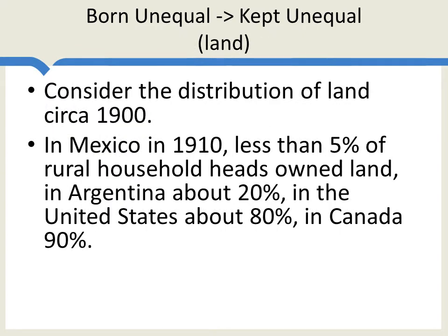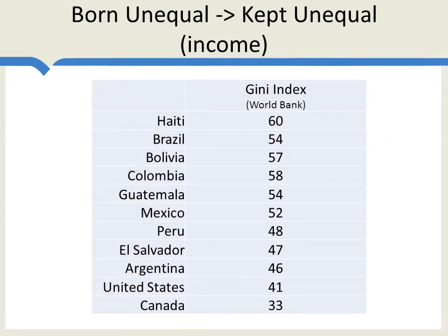And the elites were successful at doing this. In Mexico in 1910, less than 5% of rural household heads owned land. In Argentina, about 20%. Compare the United States — about 80% of rural households owned land in 1900; in Canada, it was 90%. Even today, hundreds of years after the colonial period, we still see a massive level of income inequality in these countries. Haiti's Gini index is at a very high 60%. Brazil 54%, Bolivia 57%, Colombia 58%, Guatemala 54% — some of the most unequal countries in the world. The United States, one of the most unequal developed countries, is at 41%. Canada at 33%.